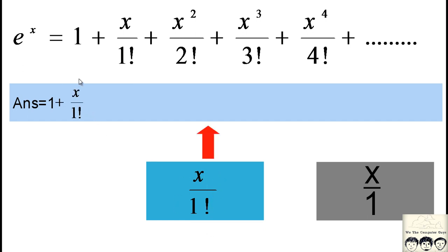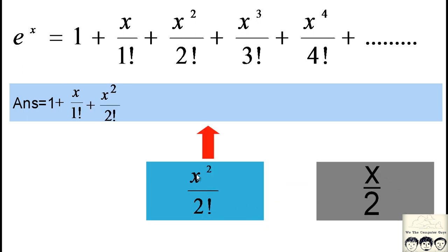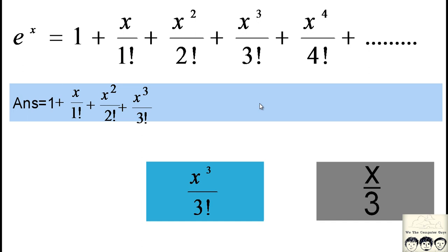We take that number and add it to our answer. To get the next term x squared by 2 factorial, we multiply the numerator by x and the denominator by 2. So we increment 1 to 2 and multiply, giving x squared by 2 factorial, then add it to our answer. We continue this way. The higher the term we go to — say x raised to 70 — the closer our approximation will be to the actual value of e raised to x.